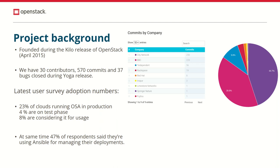According to the 2021 user survey, about 30% of users either run OpenStack Ansible in production or try it for testing. And about half of all OpenStack users say they are comfortable with Ansible and use it for managing the infrastructure. So we even have space to grow.